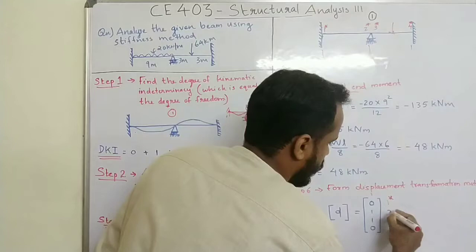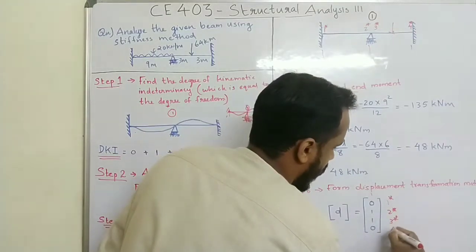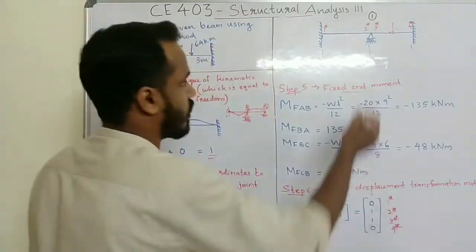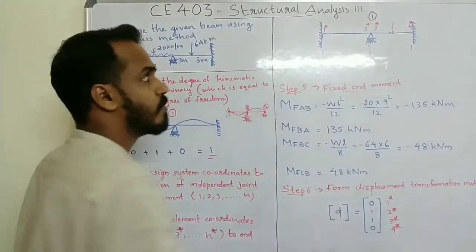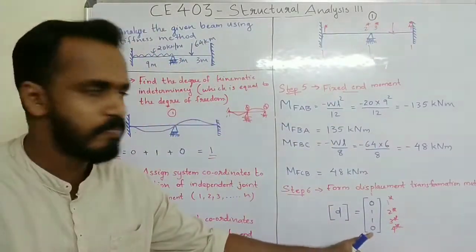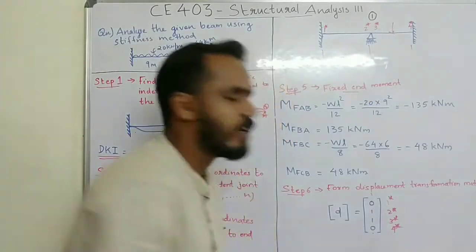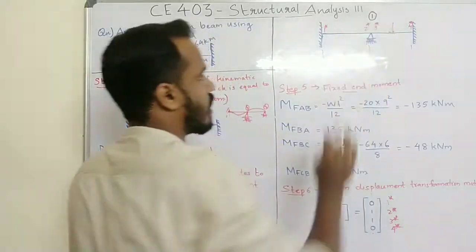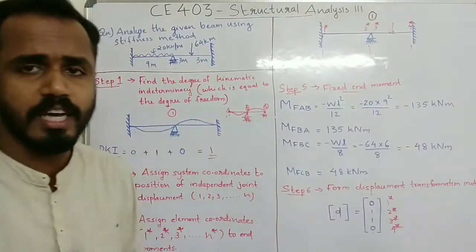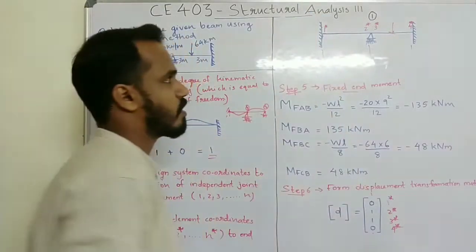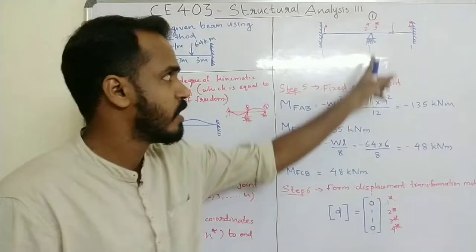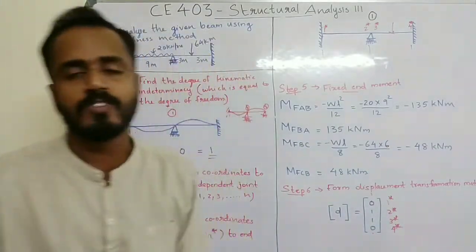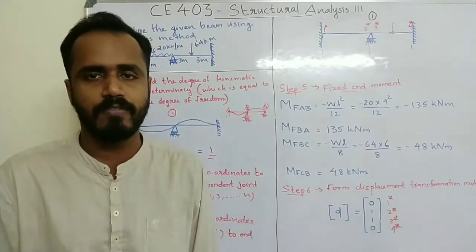The element coordinates are 1-star, 2-star, 3-star, and 4-star — 4 element coordinates total. From the first system coordinate with unit displacement, the matrix entries are: 1-star value, 0, 1-star value, and then the values follow as 1, 1, 0. This completes the displacement transformation matrix step.